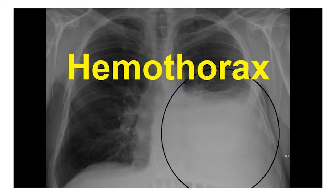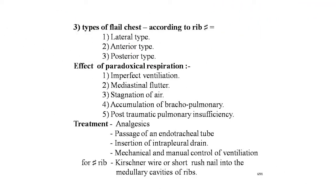There are three types of flail chest according to the fracture pattern: lateral type — fractures anteriorly and posteriorly; anterior type — anterior ends of several ribs on both sides are fractured, so the sternum and anterior rib fragments become the floating segment; posterior type — ribs fractured at their posterior angles on both sides, so the spinal column with posterior rib fragments become floating segments. Effects of paradoxical respiration include imperfect ventilation, mediastinal flutter, stagnation of air, accumulation of bronchopulmonary secretions due to tremendous pain and relative immobility, and post-traumatic pulmonary insufficiency — wet lungs may also occur.